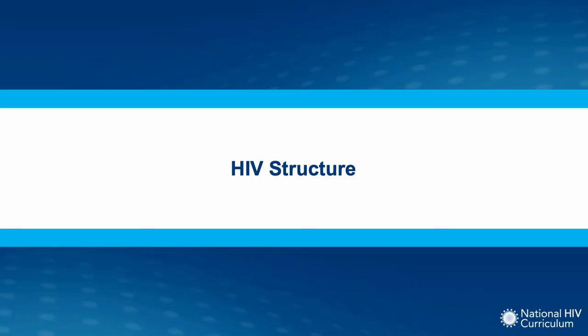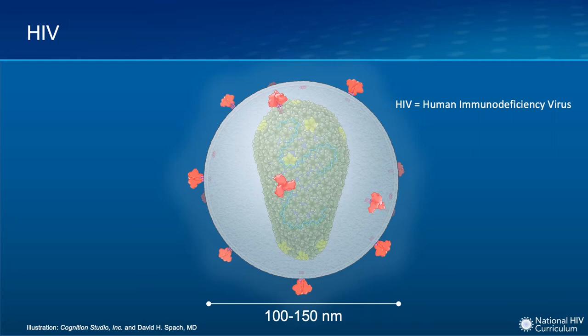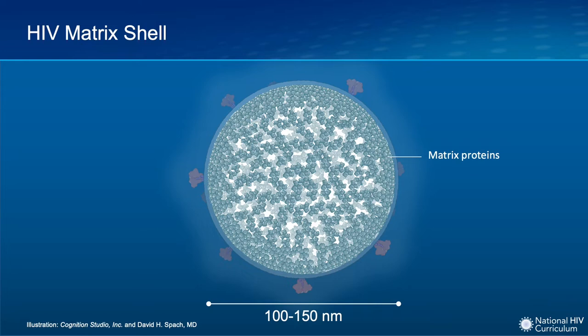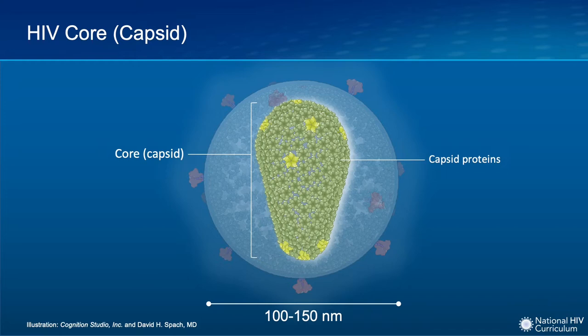Let's start with a brief look at the basic structure of HIV. HIV is a retrovirus that is roughly spherical in shape and only about 100 to 150 nanometers in diameter. To put this in perspective, a nanometer is only a billionth of a meter. The outermost part of this virus is the envelope, which consists of the envelope glycoprotein spikes and a bilayer lipid membrane. Just inside the membrane, HIV has a large matrix shell, which is comprised entirely by the HIV matrix proteins. Moving inward, HIV has a protective core, which is commonly also called the viral capsid, or capsid core, and this cone-shaped structure consists of clusters of the HIV capsid protein.